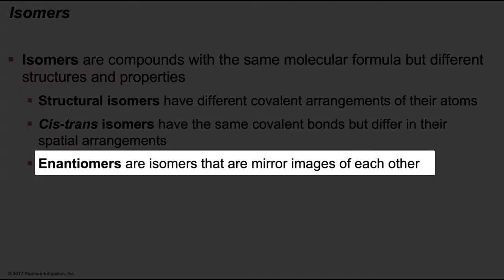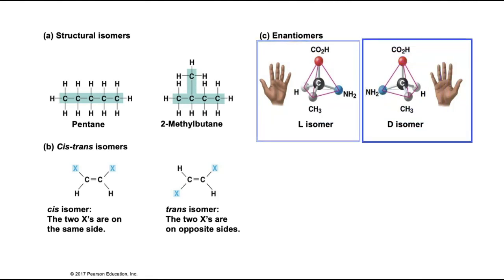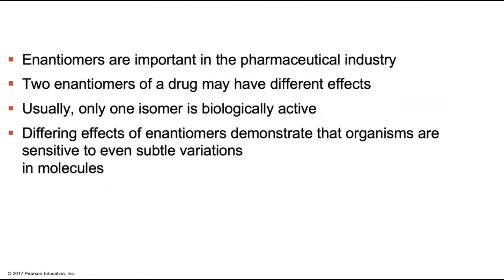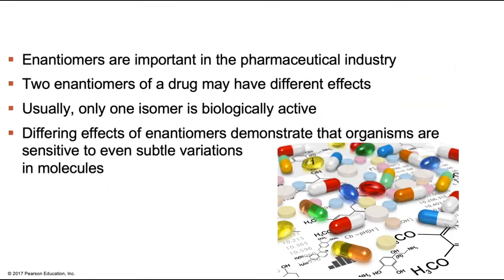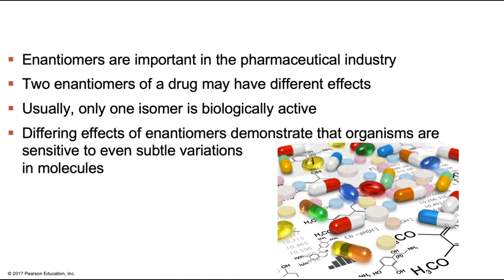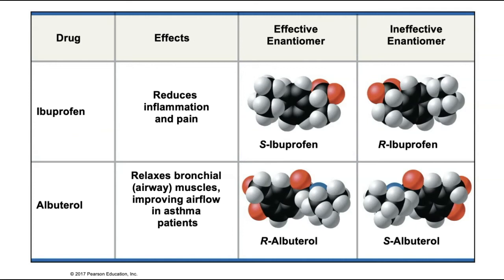Enantiomers are isomers that are mirror images of each other — think of your left and right hand. The left-handed molecule is called the L-isomer and the right-handed molecule is called the D-isomer. These might seem like minor differences; however, right and left-handed enantiomers have vastly differing effects in your body. Enantiomers are especially important in the pharmaceutical industry where two enantiomers of a drug may have vastly differing effects — usually only one is biologically active. For example, only the S-ibuprofen is effective, demonstrating the sensitivity of organisms to even subtle variations in molecules. Remember: structure and function are closely tied in biology.